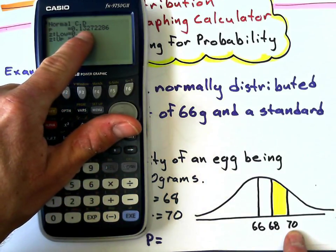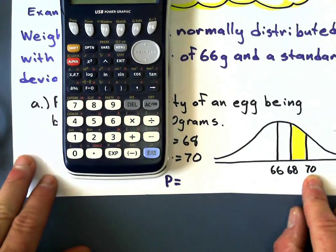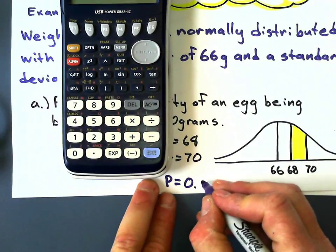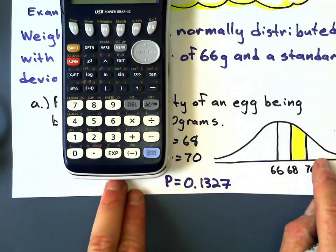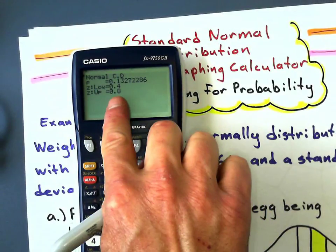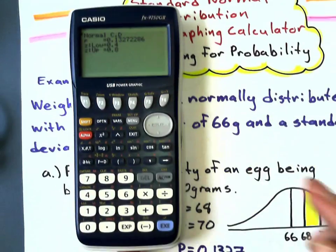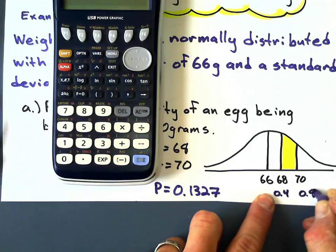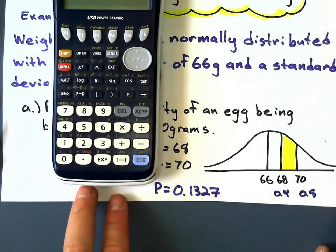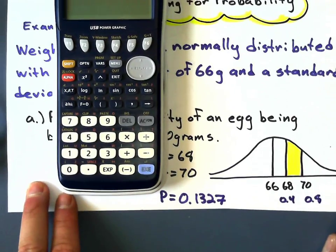You execute one more time to solve for the probability. Not only does it give you the probability, which is right there, it also gives you the two z-values which the 68 and 70 would be. So my probability here to four decimal places would be 0.1327. That's the area under the curve. The two z-values are 0.4 and 0.8, which I might need depending on what the problem is asking.